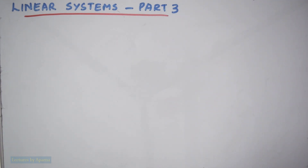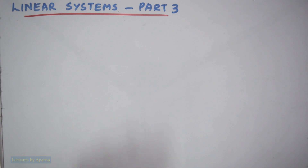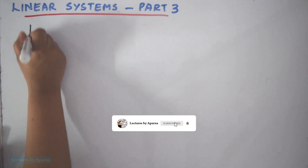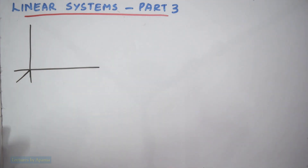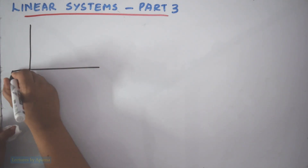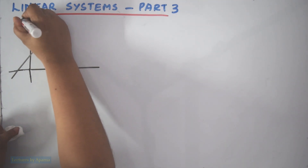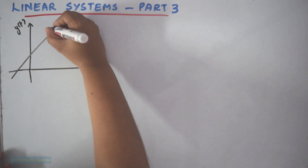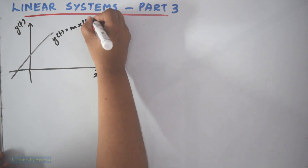Hello everyone. Welcome to lectures by Aparna. This is a part 3 video of linear systems. Today let's consider a system whose output and input is related like this — this is a straight line. The output is y(t), the input is x(t), and this is a straight line whose equation is y(t) = mx(t) + c.